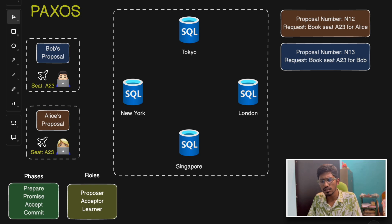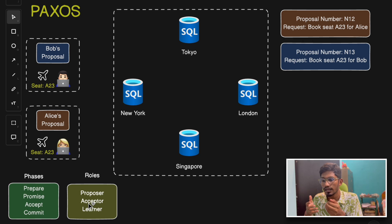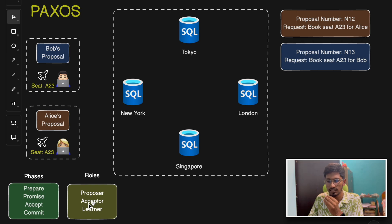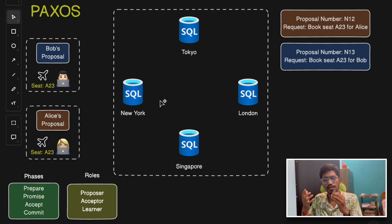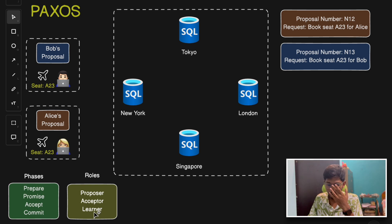In the Paxos algorithm we have three main roles: a proposer, an acceptor, and a learner. The proposer suggests a value for agreement — for example, 'book seat number 12 against Bob on this date.' The acceptors are the other nodes which vote on the proposed values. The learner role is how the entire system learns the agreed-upon final value. There are basically four phases: the prepare phase, promise phase, accept phase, and commit phase.